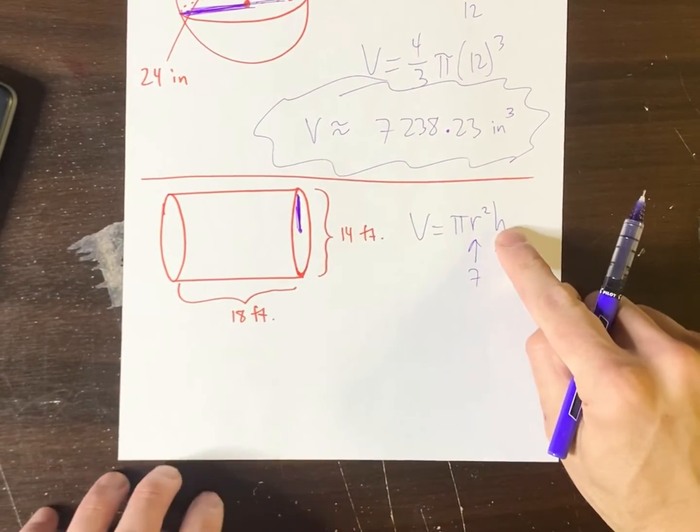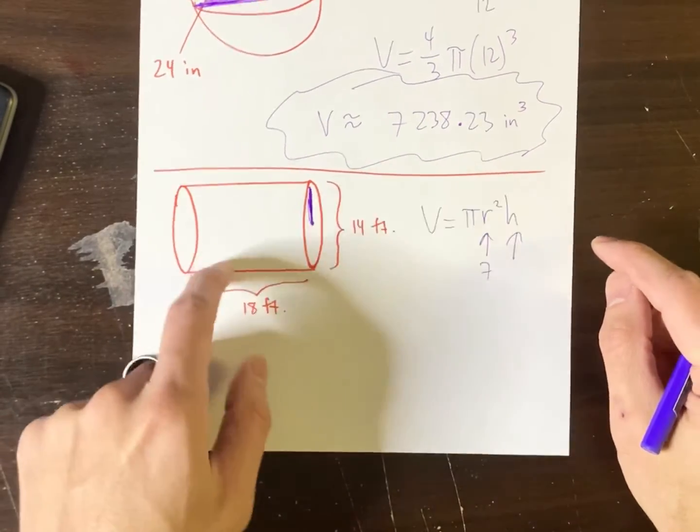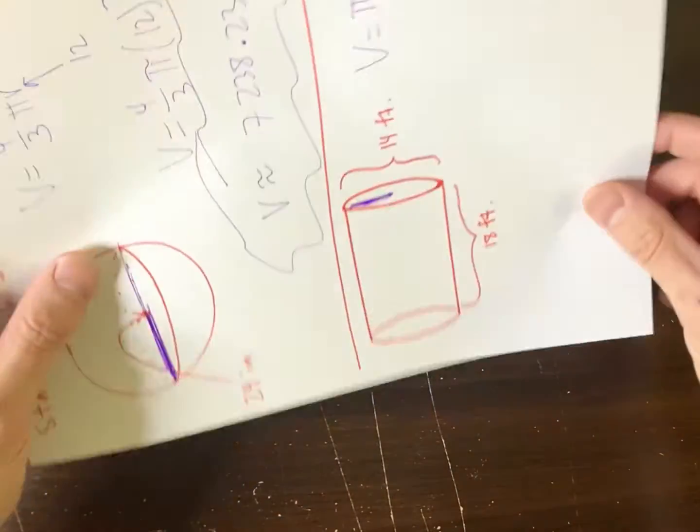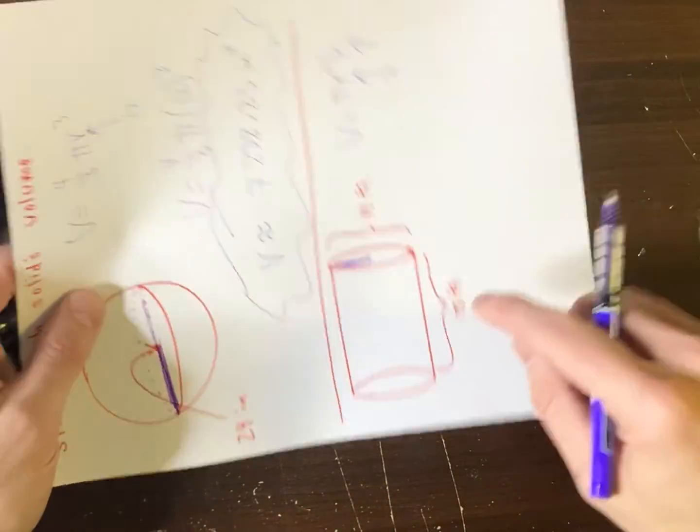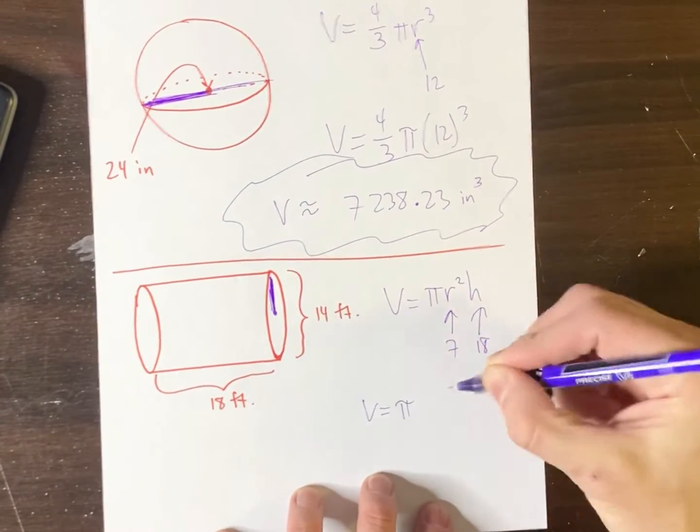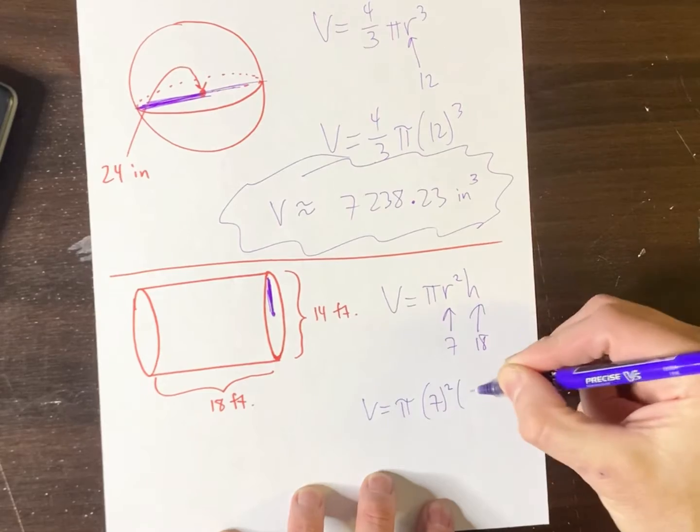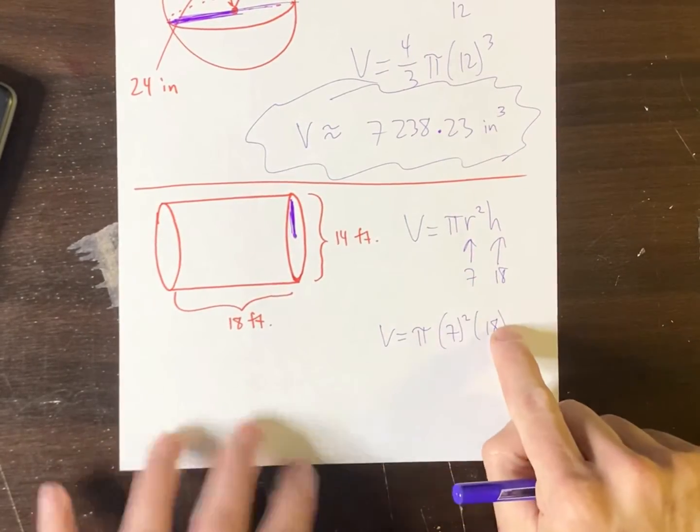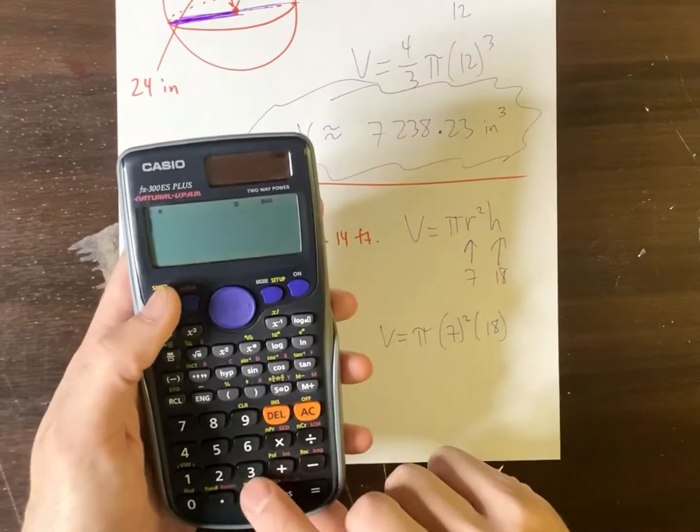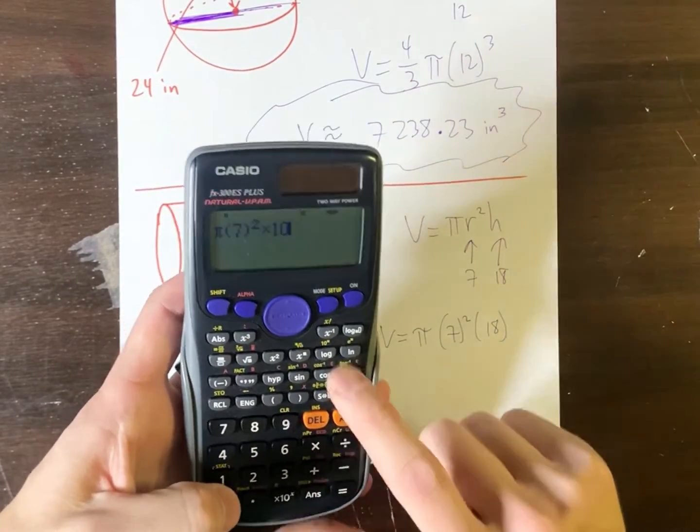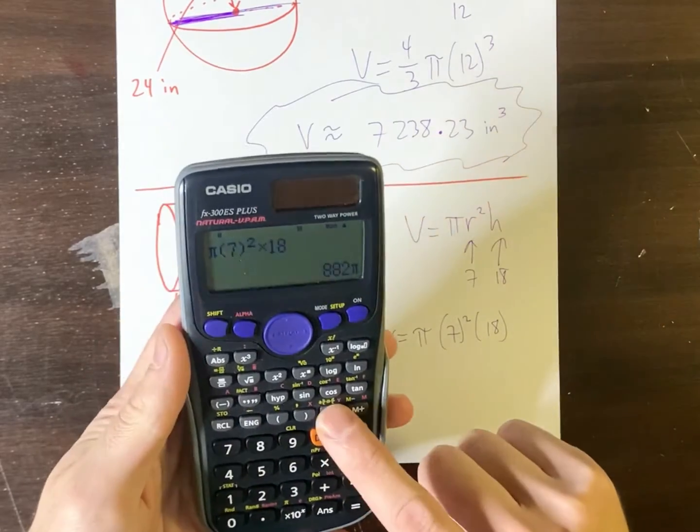Now the height is how tall the Pringles can would be if it stood here on my desk. So if I stood up the Pringles can, it would be 18 feet tall. That's a giant Pringles can. But I'm not complaining. So let's see. So pi r squared h. And honestly, just go straight to your devices. Just go straight to your calculator. Let it do the rest for us.